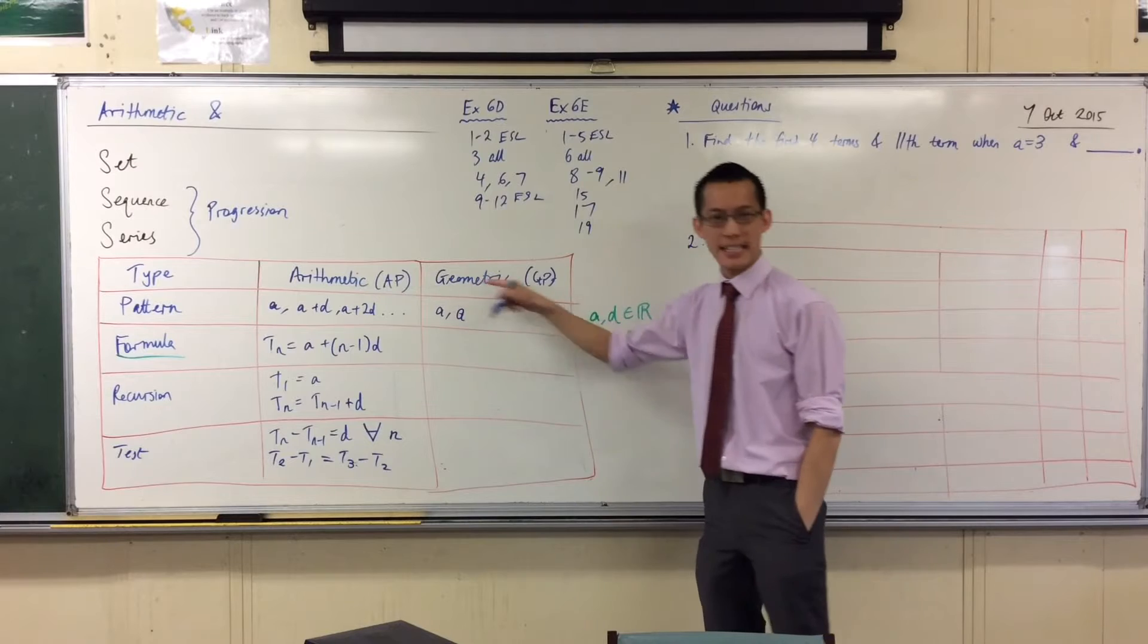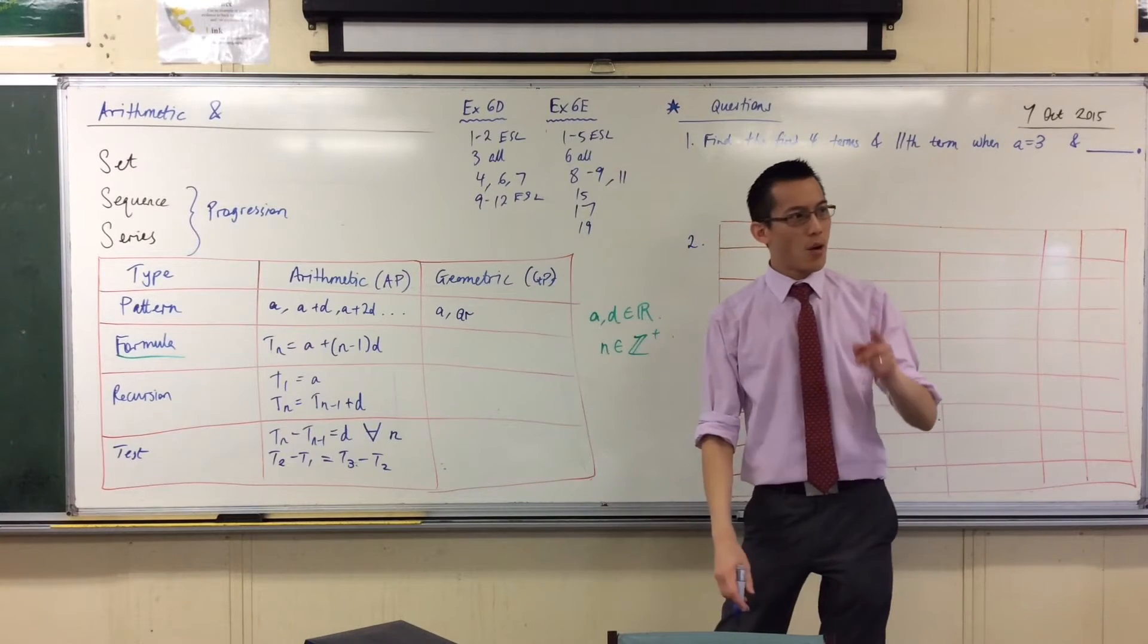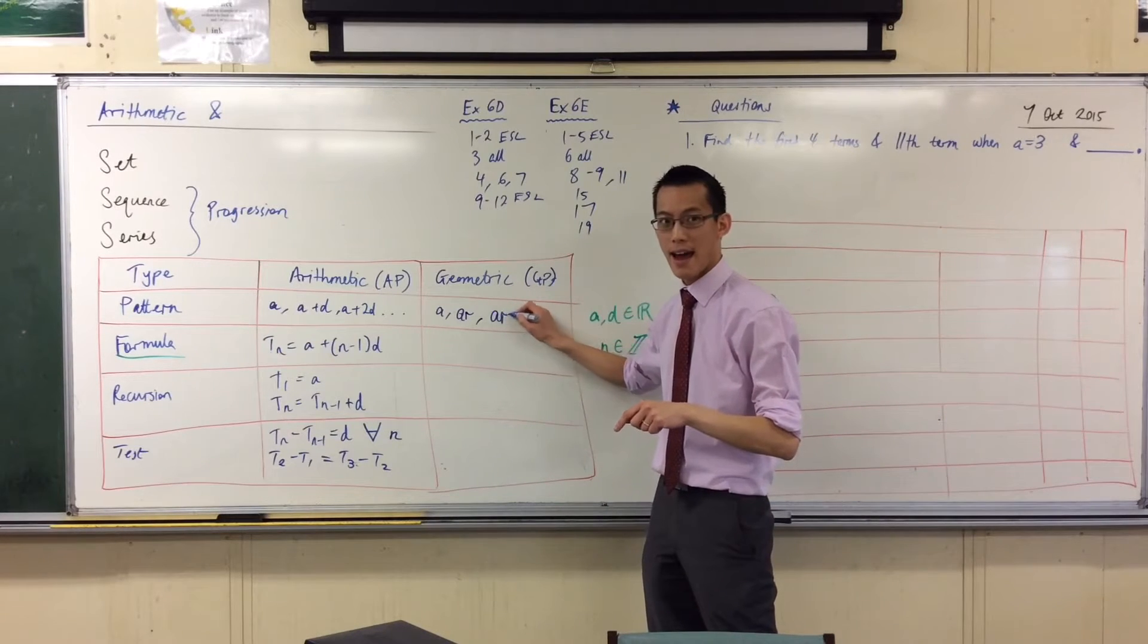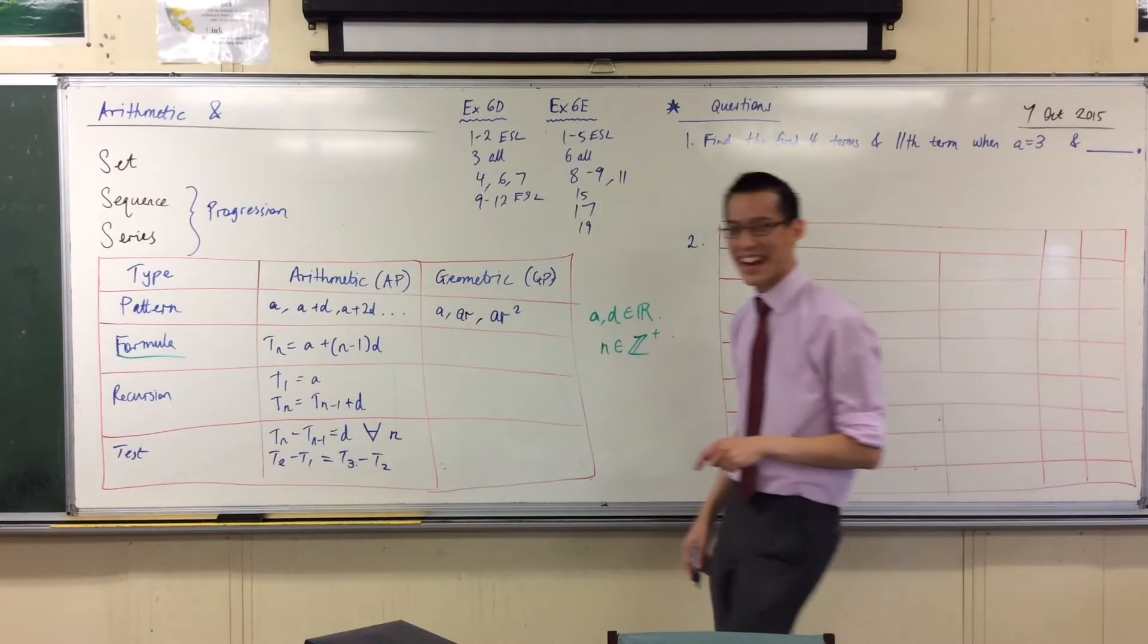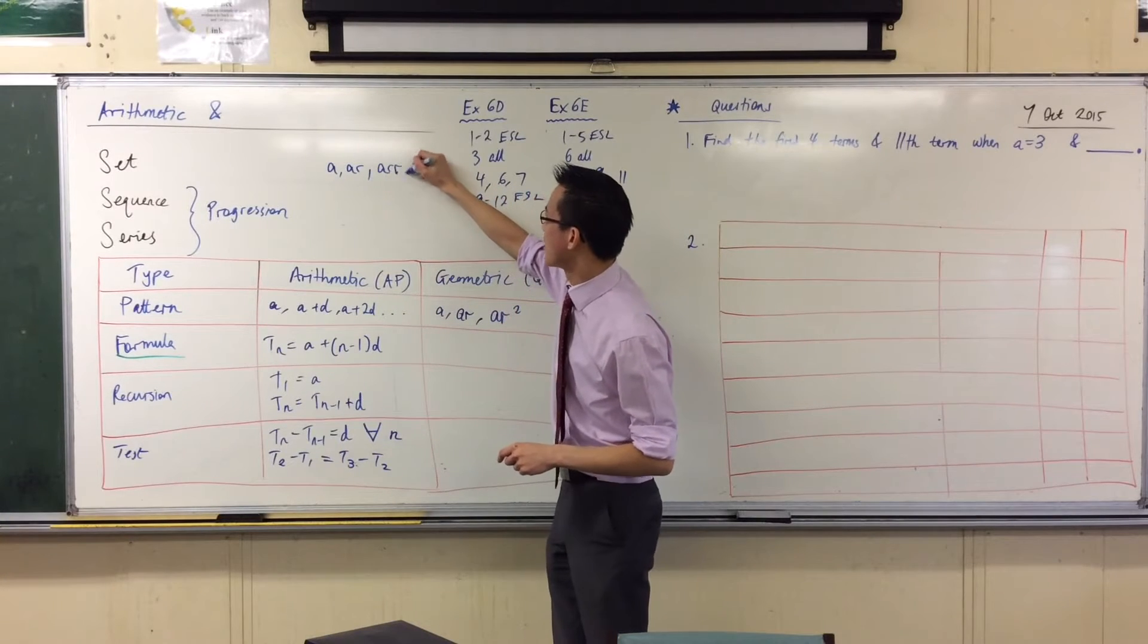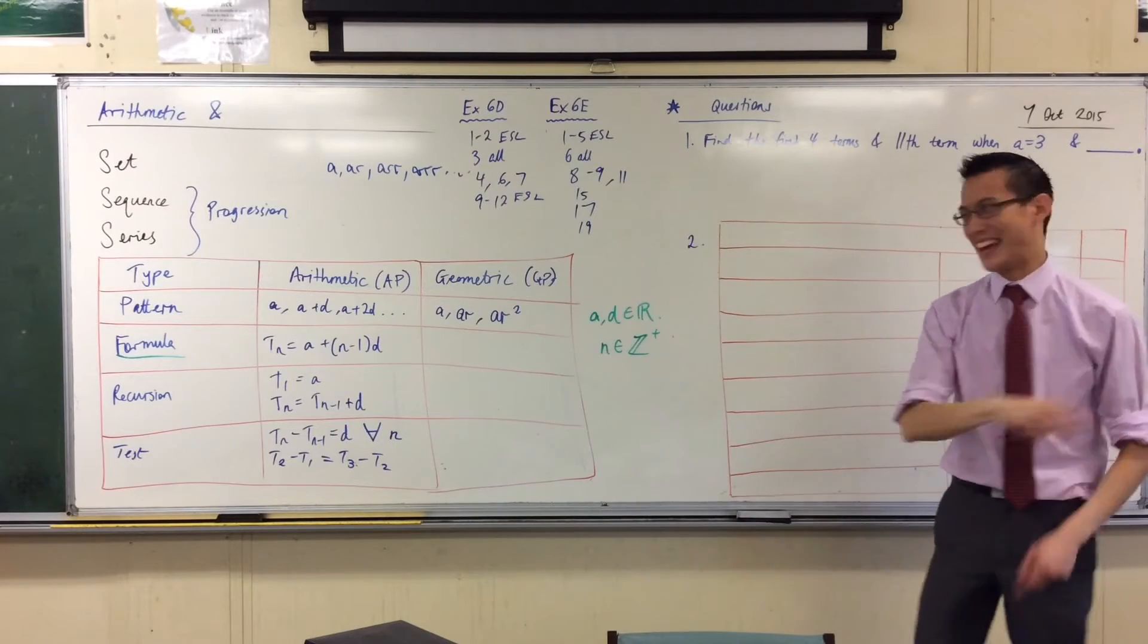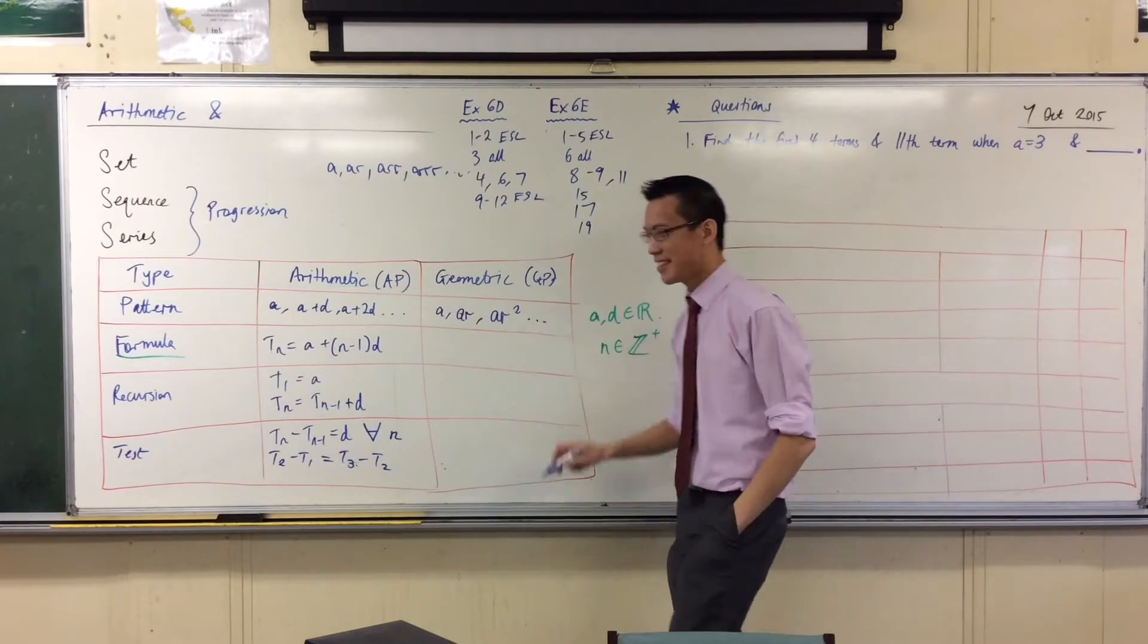So instead of AD, I'm going to call this next term A times R. When I multiply again to get to the next term, I multiply by R again. So it's going to be AR squared. I've got three terms. That's all I knew.